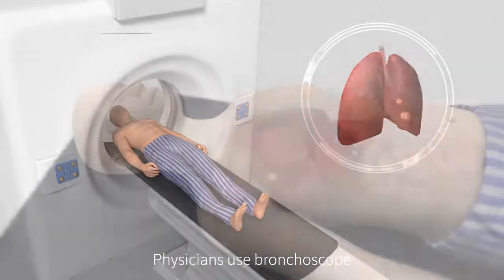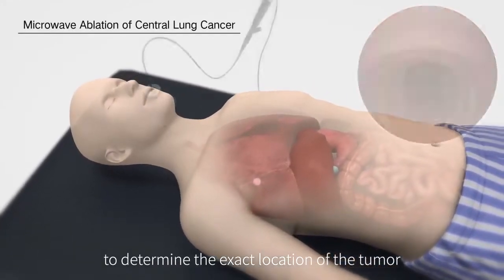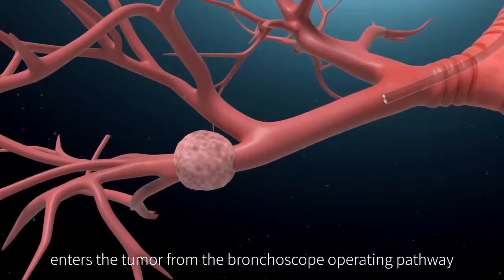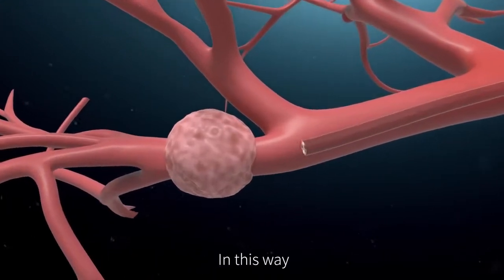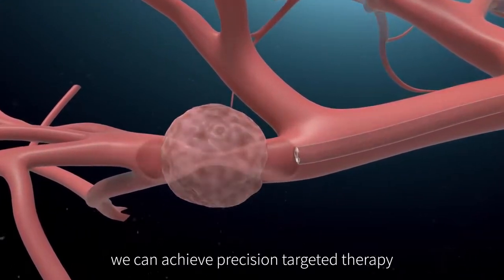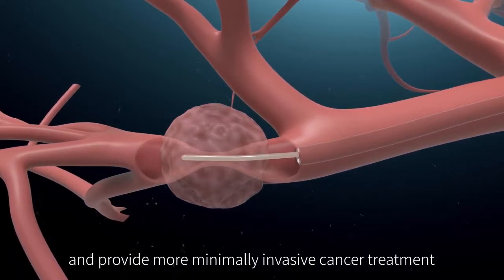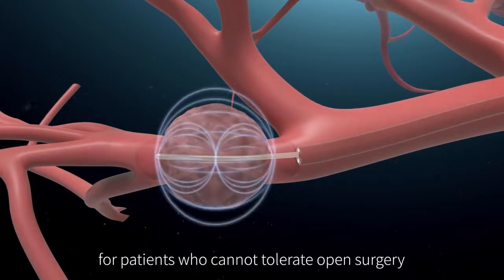Physicians use bronchoscope to determine the exact location of the tumor, and the bronchoscopic flexible microwave ablation antenna enters the tumor from the bronchoscope operating pathway. In this way, we can achieve precision-targeted therapy, reduce unnecessary side effects, and provide more minimally invasive cancer treatment for patients who cannot tolerate open surgery.